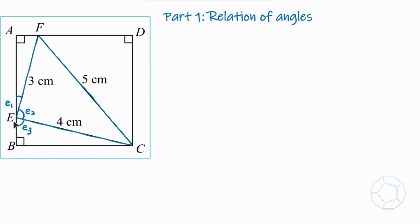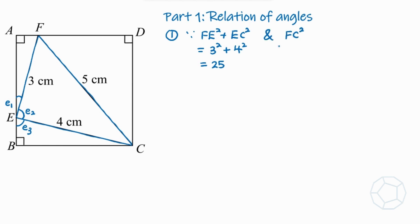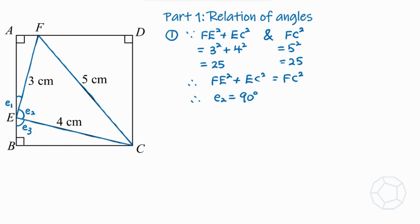In the figure, we have marked the three angles at point E as E1, E2, and E3. Now let's focus on triangle FEC. Because FE² + EC² = 3² + 4² = 25, and at the same time the longest side FC² = 5² = 25, therefore FE² + EC² = FC². Hence angle E2 equals 90 degrees, by the converse of the Pythagorean theorem.